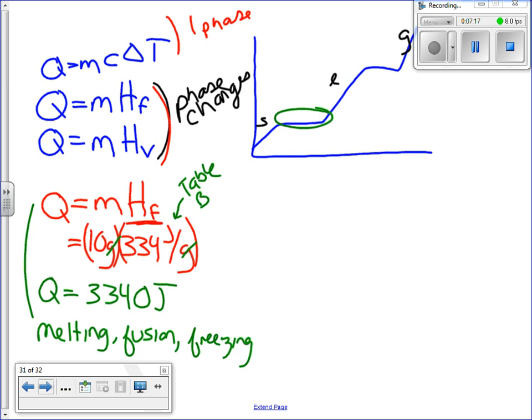The next one is basically the same, Q equals mHv. When would you use this formula? When you're vaporizing. You would use this one when you're vaporizing something. Guess what? You can still find Hv on table B. Hv is just 2260 joules per gram. That's how much heat it takes to vaporize one gram of water.